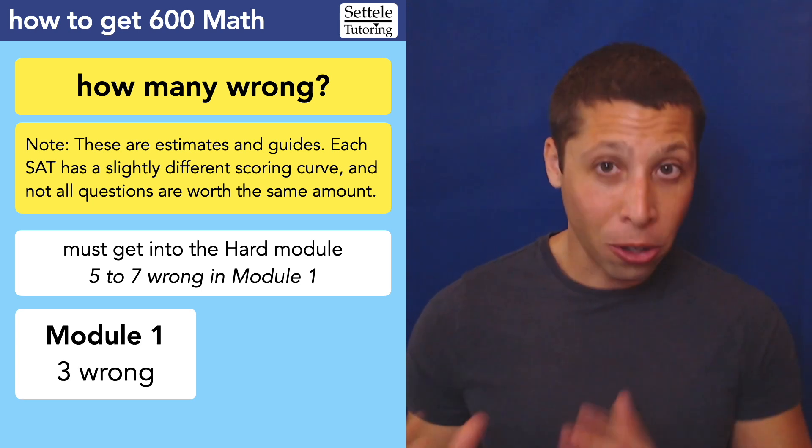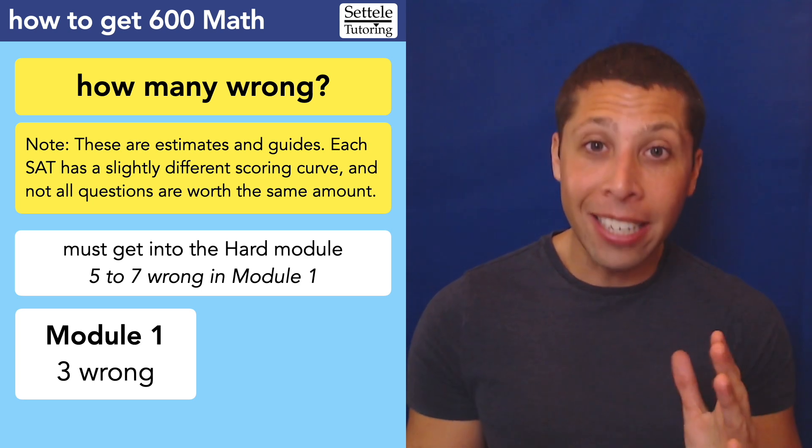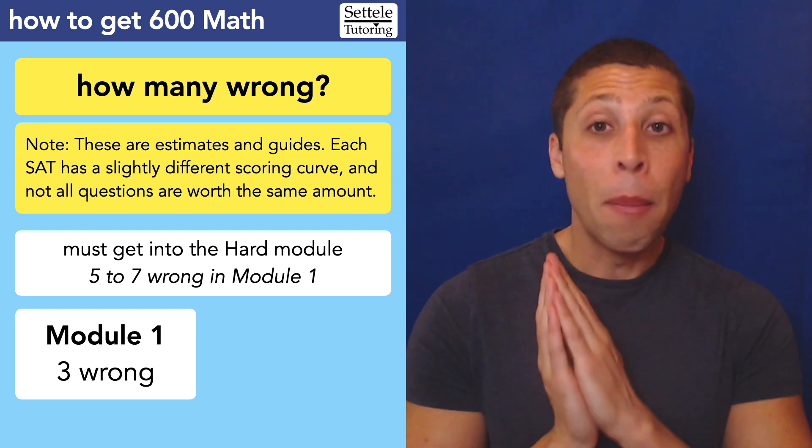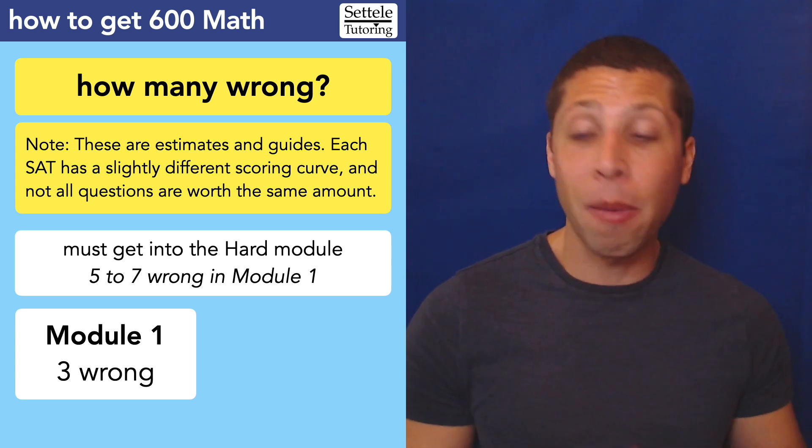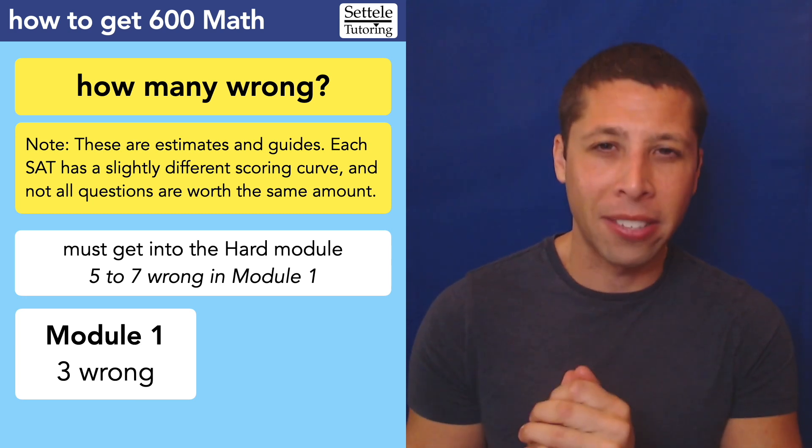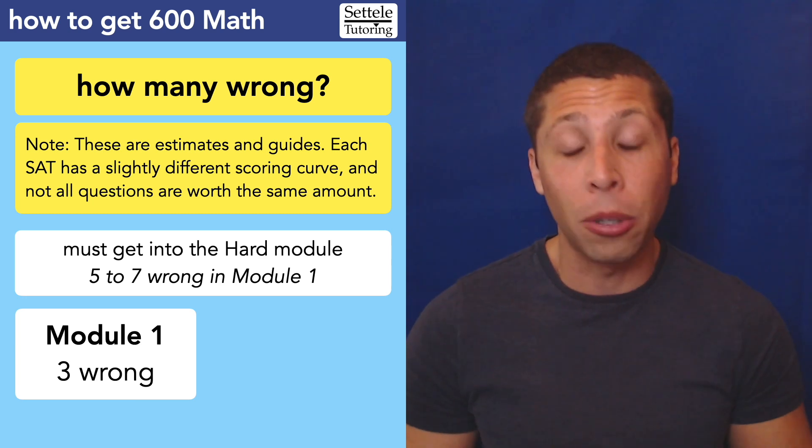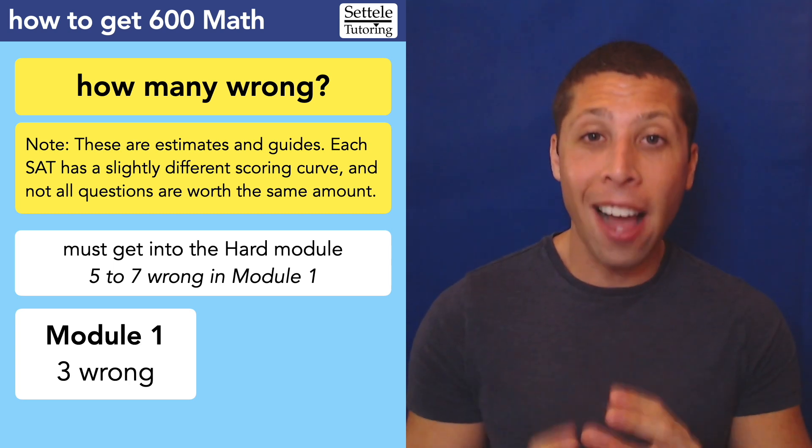if you really want a 600, I think you've got to keep the errors down to three. And yes, there will be some hard questions near the end of the first module. It's not completely easy. It does have some hard things. But if you ignore those questions and get them all wrong, no big deal. You can still get placed in the hard module and keep your errors to a minimum because you can prevent careless mistakes and other trap answers,